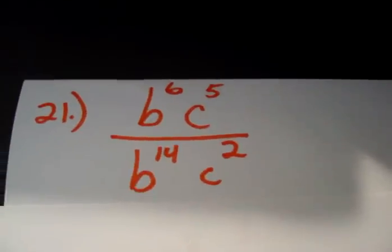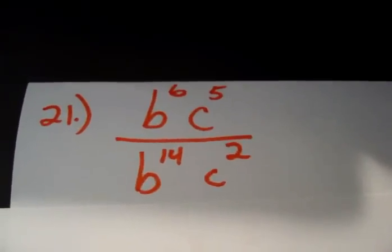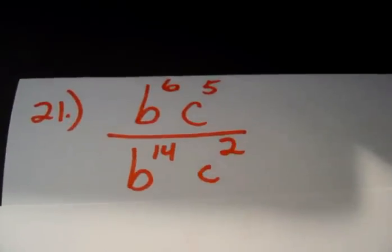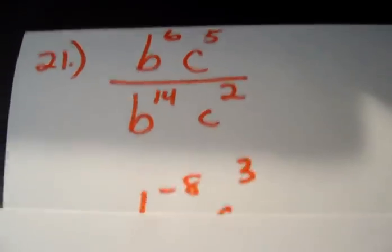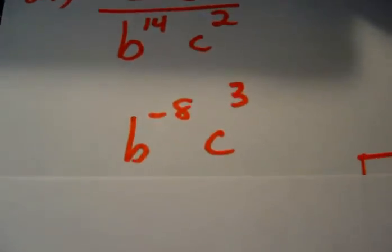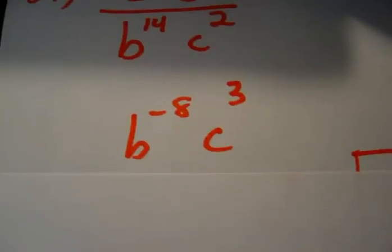So you're going to have, for the b variable, the 6th power minus the 14th power, and for the c variable, the 5th power minus the 2nd power. Doing so, you get b to the negative 8th times c to the 3rd power.